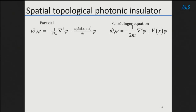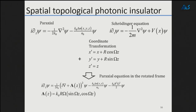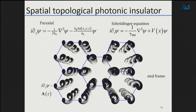In the paraxial equation, which is equivalent to the Schrödinger equation, if we do a coordinate transformation to a rotating frame, we get that in the rotating frame, we see straight waveguides. But the price we pay is a vector field — and this vector field is exactly circularly polarized light. This is why our system is equivalent to the 2D graphene sheet with an impinging magnetic field.